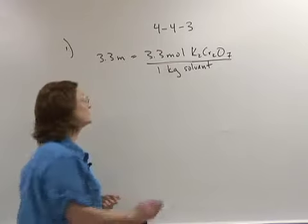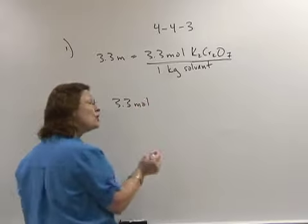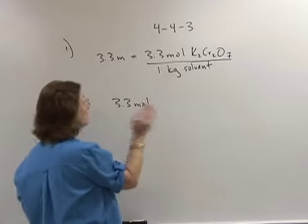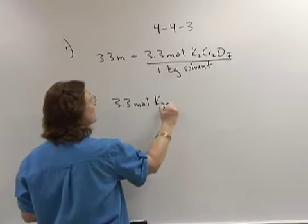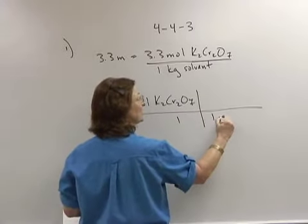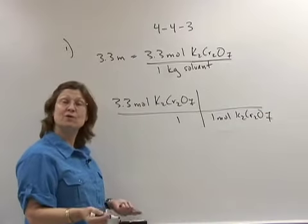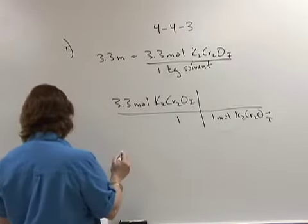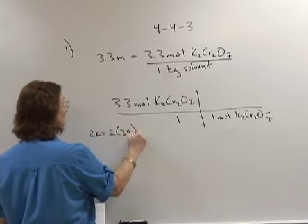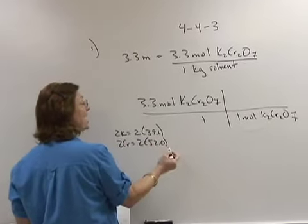Molality gives me both parts that I need, and because this one is in moles, I'm going to have to change it to grams. Therefore I have 3.3 moles. Notice there's a big difference between molality and a mole. We need to keep them straight. We have potassium dichromate and now I want moles on the bottom so they cancel, and in the top I need the AMU or the formula mass.